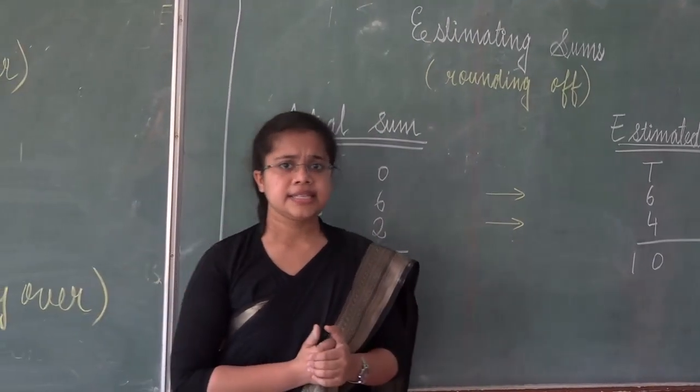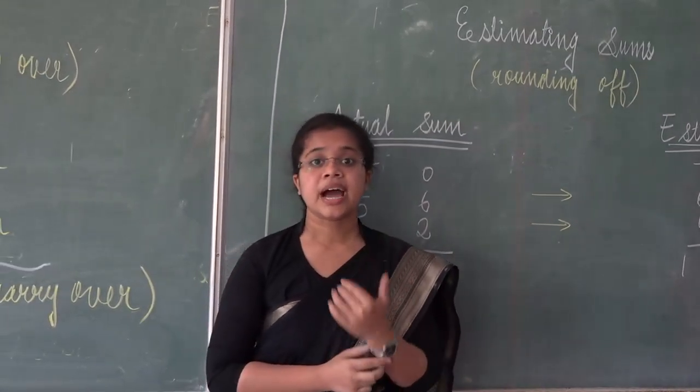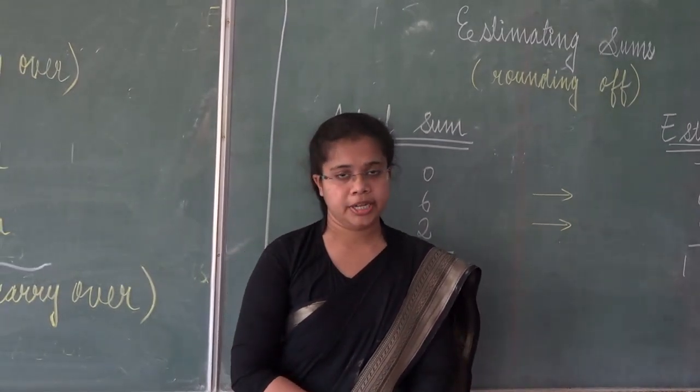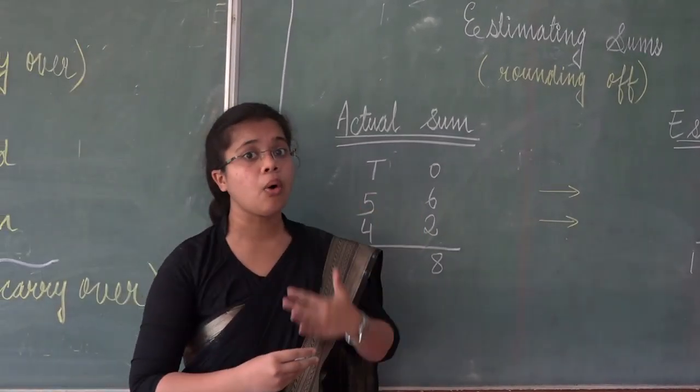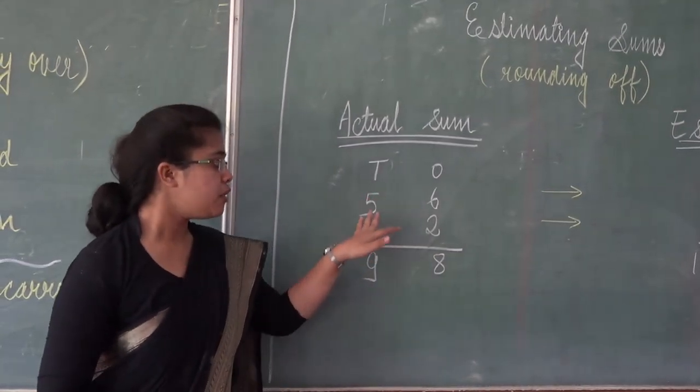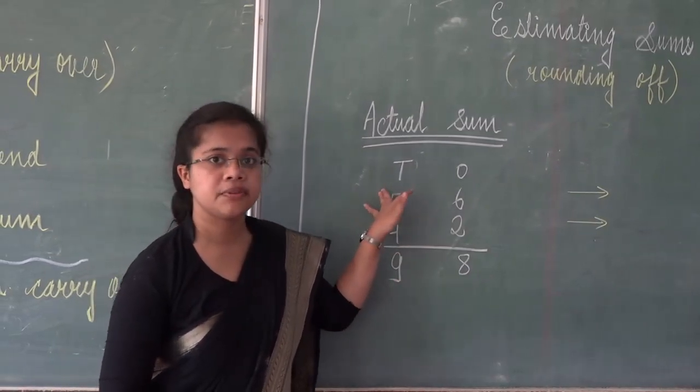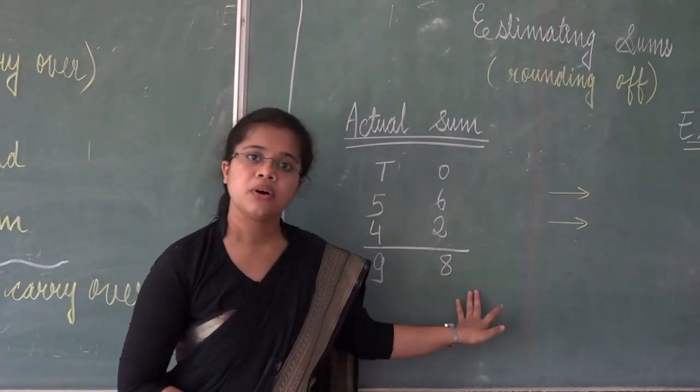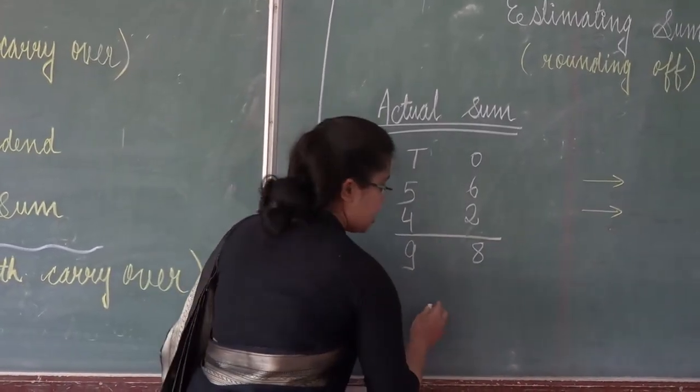So what is order property. There are different things or different points that you need to keep in your mind. That is order property. Even if we change the order of the numbers, like even if you add 56 plus 42 or 42 plus 56, the answer is always same. So that is order property.